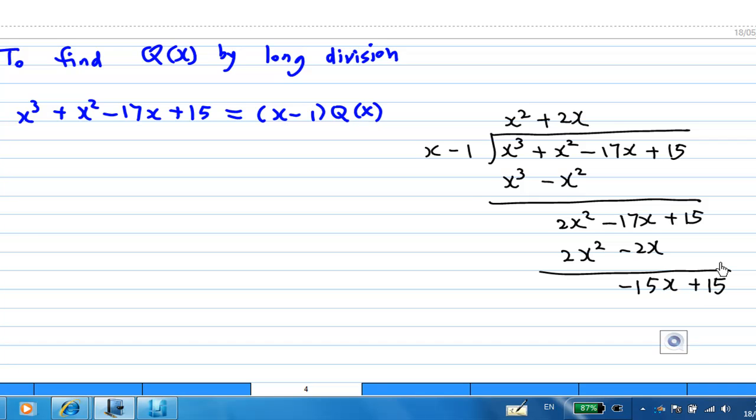Multiply x minus 1 by minus 15. Then I get minus 15x plus 15. Subtract, and you get 0. You're supposed to get remainder 0. So where is my q(x) now? So q(x) will be this, and remainder is 0.